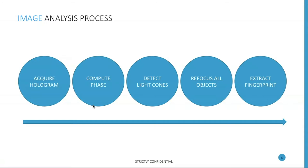The light cones are very important — not only to detect where the different cells are, but also to look at the viability of the cells. Once that's done, there is the refocusing of all objects, and then we extract what we call the fingerprint of a cell. That fingerprint is used in a machine learning algorithm that gives a result. The five steps basically take a couple of milliseconds to perform.